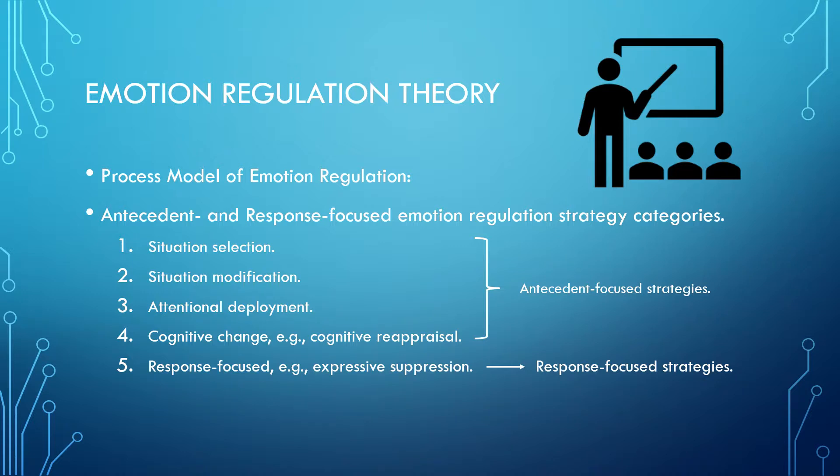Expressive suppression often backfires, however. This is where cognitive reappraisal can be a more effective strategy, as you are reinterpreting a situation before an emotional response has fully developed, as preventing an angry outburst is usually the best way to regulate it.